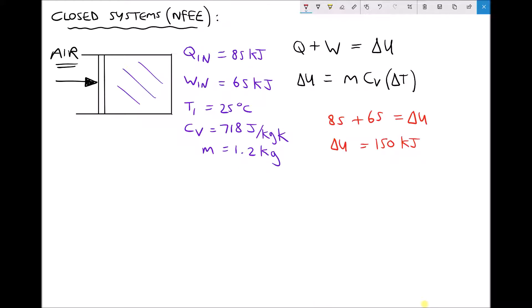Once again we want to calculate the temperature of the air after it's been heated and compressed. So if we take our second formula then, we have delta U equals MCV T2 minus T1. Now the only unknown here is T2.